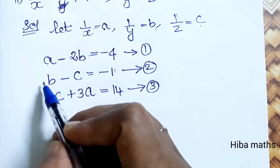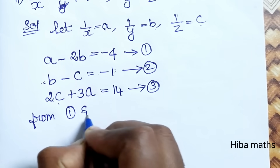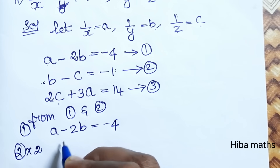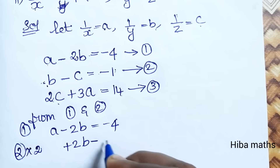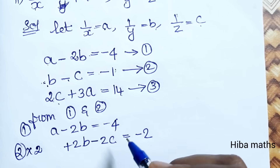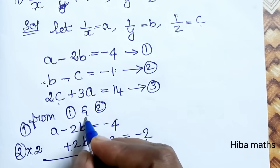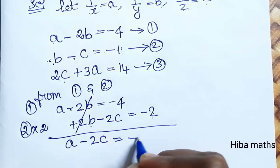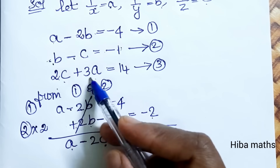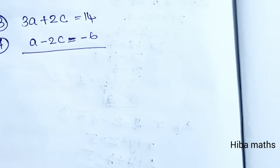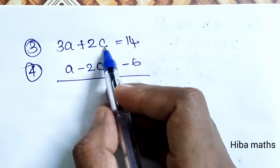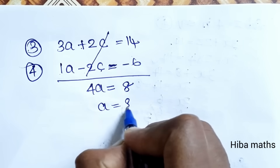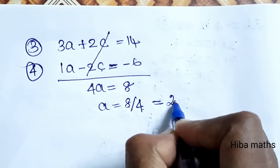Multiplying the second equation by 2: 2b minus 2c equals minus 2. Adding to the first equation (a minus 2b equals minus 4): the 2b terms cancel, giving a minus 2c equals minus 6. This is the fourth equation. Now using the third equation (3a plus 2c equals 14) and the fourth equation (a minus 2c equals minus 6): adding them, the 2c terms cancel, giving 4a equals 8.